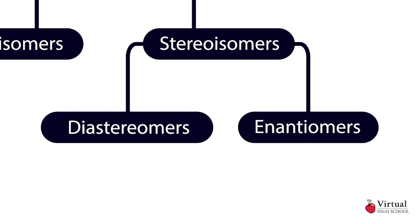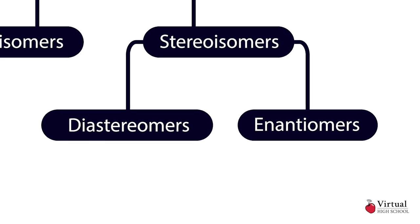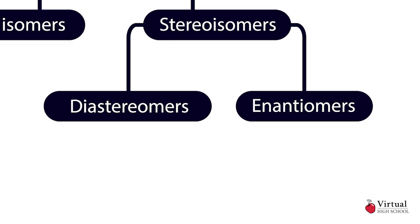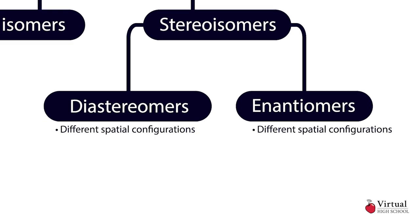The distinguishing property of these two groups is the reflective symmetry of the molecules. Both diastereomers and enantiomers have different spatial configurations. Diastereomers, however, are not mirror images of one another, while enantiomers are mirror images of one another.